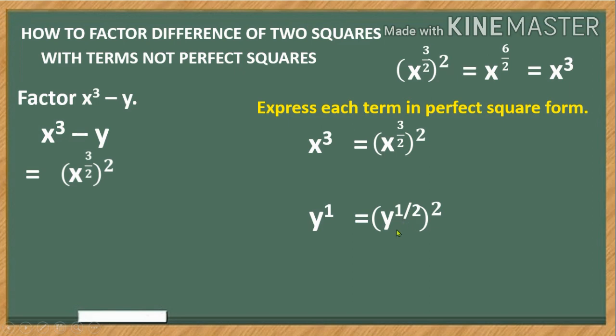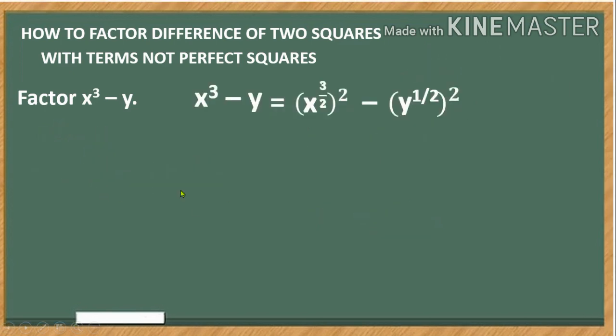So we have here the subtraction operation and then again copy. So we are done expressing its term in perfect square form. To continue, we have here this is a perfect square now expression, this is also a perfect square expression.